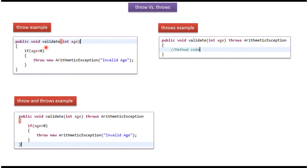Here you can see the example of the throw keyword. If age is less than 0, using the throw keyword I am throwing an arithmetic exception. Here you can see the example of the throws keyword — using throws I am specifying that this method may throw an arithmetic exception.